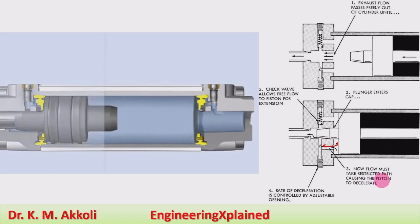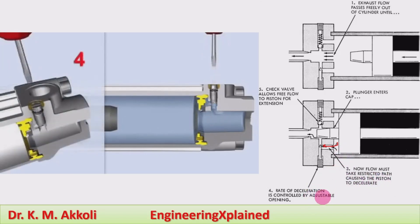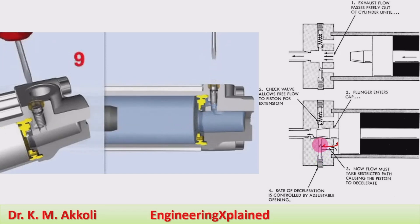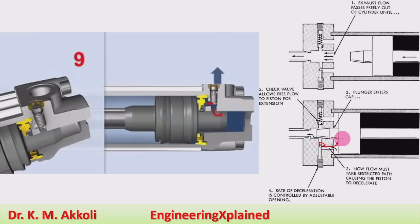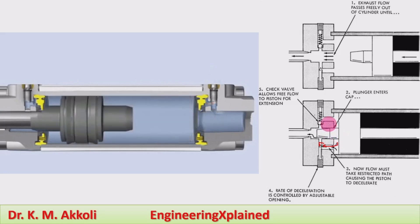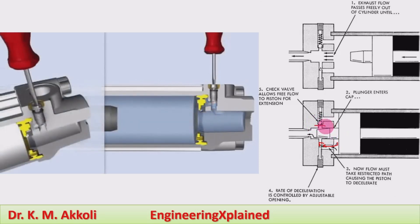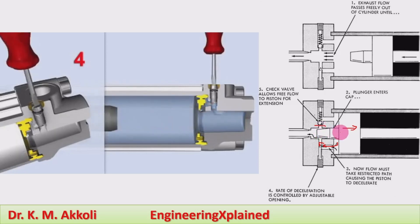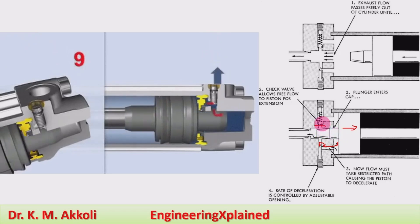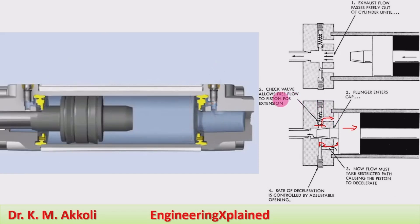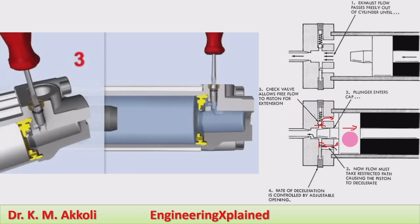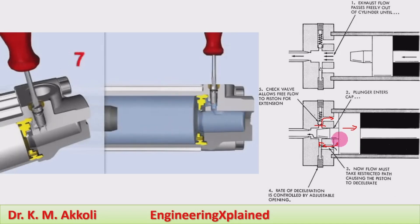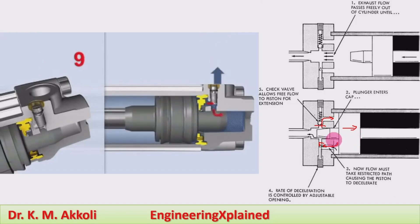The flow must take a restricted path causing the piston to decelerate. The rate of deceleration is controlled by an adjustable opening — there is a screw for adjustable opening, and the required flow rate decides the rate of slowing or deceleration. There is also a check valve: during the extension or return stroke, the flow initially takes place through this check valve, which allows free flow to the piston for extension, thereby achieving the initial speed required.